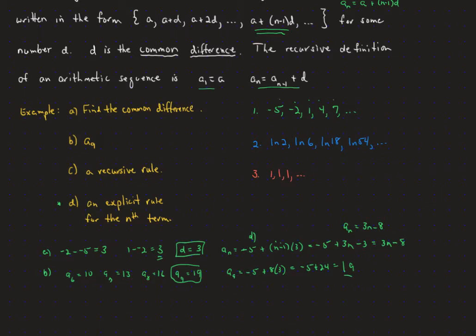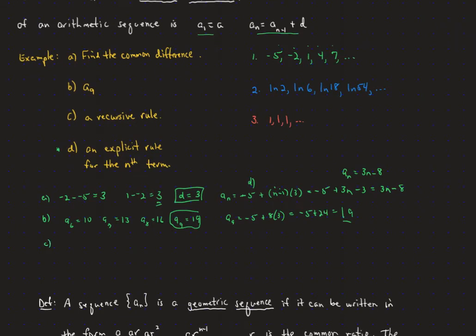The recursive formula for the green sequence requires two things: where it starts and how to get the next term from the previous. So a sub 1 equals negative 5, and a sub n equals a sub n minus 1 plus 3.